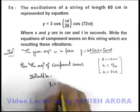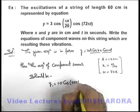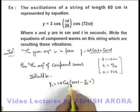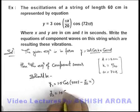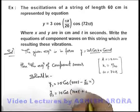y₁ = 1.5 cos(72πt - πx/20), which is A cos(ωt - kx), and the other one is A cos(ωt + kx).